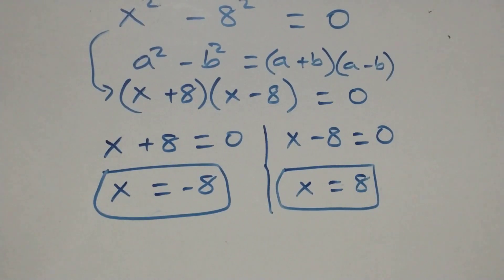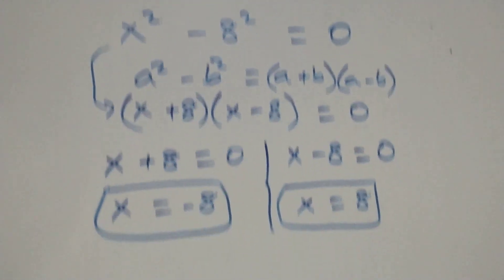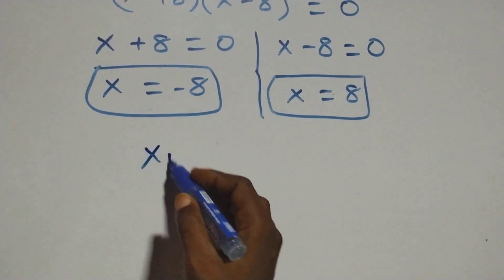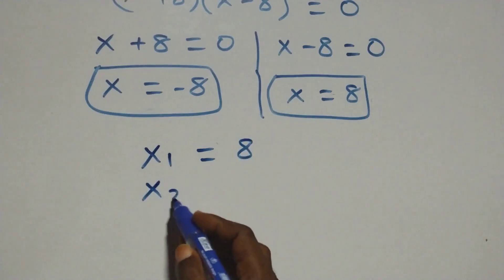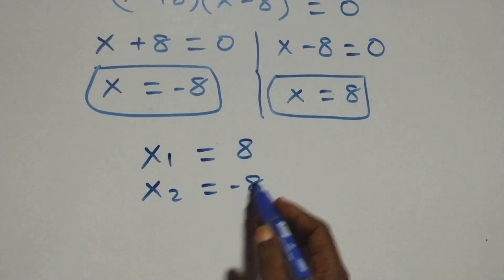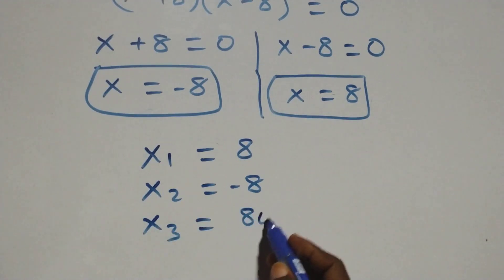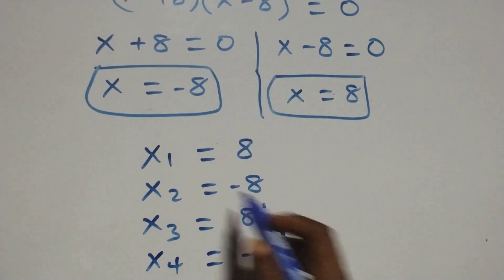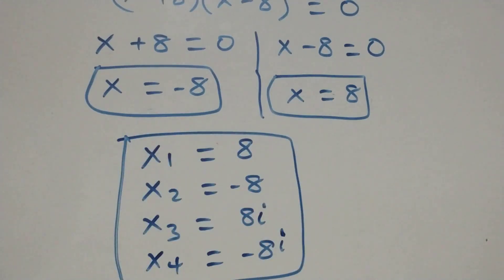So we have two real solutions and two complex solutions. Writing them out: x₁ = 8, x₂ = −8, x₃ = 8i, and x₄ = −8i. Now let's check that each solution satisfies the original problem.